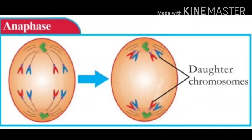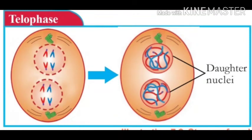The fourth phase is known as telophase. During this phase, the daughter chromosomes reach the poles and cluster together to form chromatin reticulum. The nucleolus and nuclear membrane reappear, and two daughter nuclei are formed.